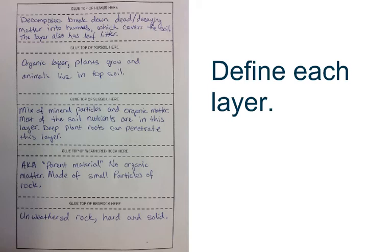Underneath that, we have our subsoil, which is our mixture of mineral products such as an organic matter. Most of the soil nutrients are in this layer, so here's where we help nourish the plants. Deep plant roots can penetrate this layer, particularly larger trees.